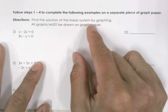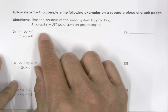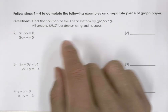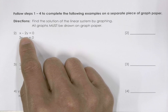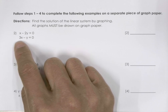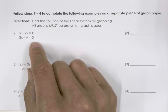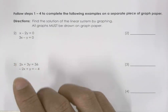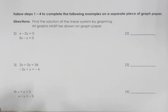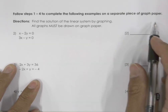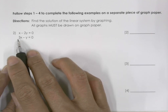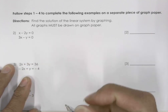Find the solution of the linear system by graphing. All graphs must be drawn on graph paper. We have two linear equations: x minus 2y is equal to 0, and 3x minus y is equal to 0. We're going to graph these equations on graph paper and write our solution. But before we do, we're going to write each equation into slope-intercept form.